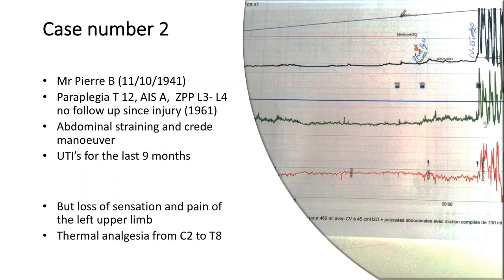We started intermittent catheterization plus parasympatholytic drugs simultaneously — always at the same time — explaining that IC is for bladder emptying, but for continence and to reduce the risk of UTI and kidney complications you also have to reduce detrusor pressure. It takes months to see the full benefit because the drug needs time to work. Eventually the patient said he wished he had started it before.